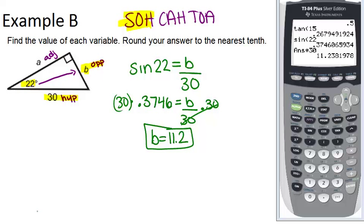If we want to stick with using the 30, we could say, all right, we're going to use the 30, and we're going to use the A, which is adjacent. And again, we're going to use the 22 degree angle. So we're dealing with adjacent and hypotenuse, which is cosine.